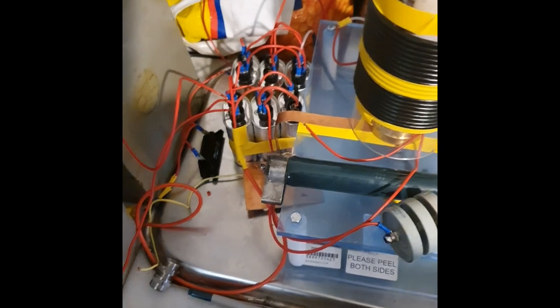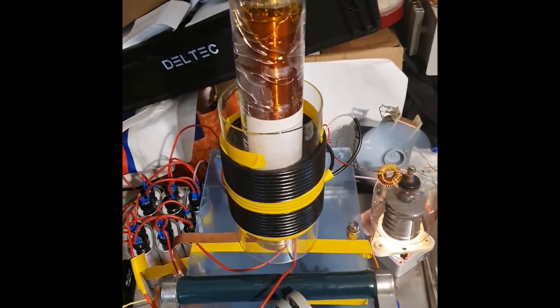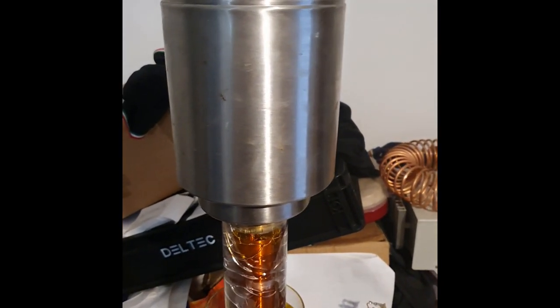So, to minimise ripple, but we're still using the same transformer arrangement, giving about 1400 volts, and at the moment I've got a small breakout point.